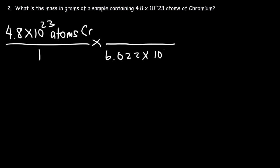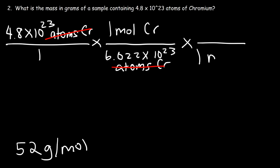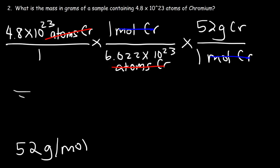6.022 times 10 to the 23 atoms of chromium can be found in one mole of chromium, so atoms of chromium will cancel. Now we need to convert from moles to grams. You need to find the atomic mass of chromium in the periodic table — it's the larger of the two numbers. The molar mass of chromium is 52 grams per mole, so one mole of chromium contains a mass of 52 grams. We take 4.8 times 10 to the 23, divide by 6.022 times 10 to the 23, then multiply by 52. The answer is 41.45 grams of chromium.